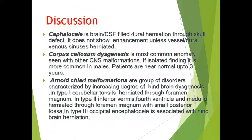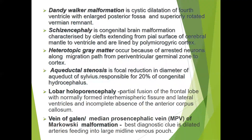In the discussion: encephalocele is the brain or CSF-filled dural herniation through a skull defect. It does not show enhancement unless a vessel or dural venous sinus is herniated, so MRI with venogram is performed for differentiation. Corpus callosal dysgenesis is the most common anomaly seen with other CNS malformations; if an isolated finding, it is more common in males and patients are near normal up to three years. Arnold Chiari malformations are a group of disorders caused by increasing degrees of hindbrain dysgenesis: in type 1, cerebellar tonsils herniate through the foramen magnum; in type 2, the inferior vermis and medulla herniate through the foramen magnum with a small posterior fossa; in type 3, occipital encephalocele is associated with hindbrain malformation and herniation.